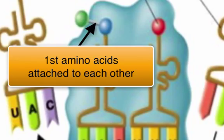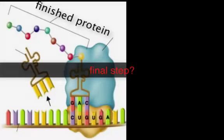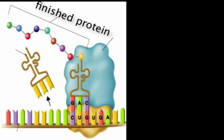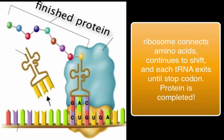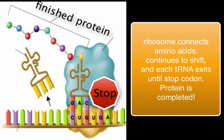In step five, the ribosome has shifted over quite a few codons. Previous tRNAs have left, and the amino acids have been attached to each other. This process continues until the ribosome reaches a stop codon, such as UGA. No more tRNAs enter, no more amino acids are attached, and the finished protein is released. The cell can then further process that protein so it can do its job and make our traits.